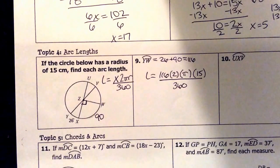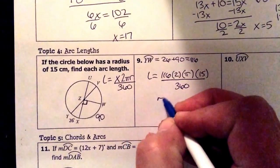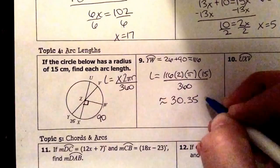I've got to start over again. 116 times 2 times π times 15 and I'm going to take that and divide it by 360. I get approximately 30.35 and that's in centimeters.